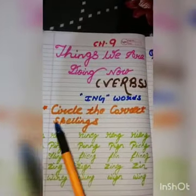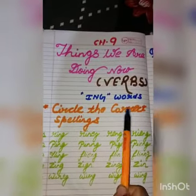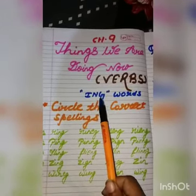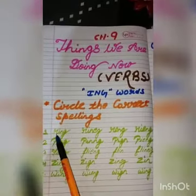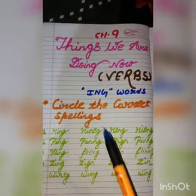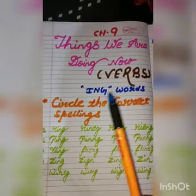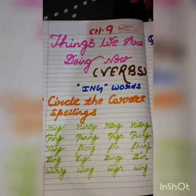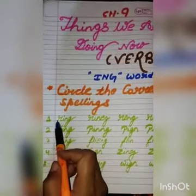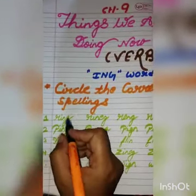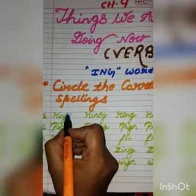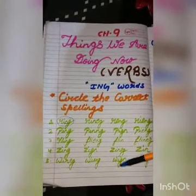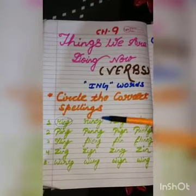The first question is: circle the correct spellings. You have to circle the right one that ends with the ing word. See the first one — R-I-N-G, ring. The right one is R-I-N-G because it ends with ing. Circle it. In this way you have to do it in your copy.